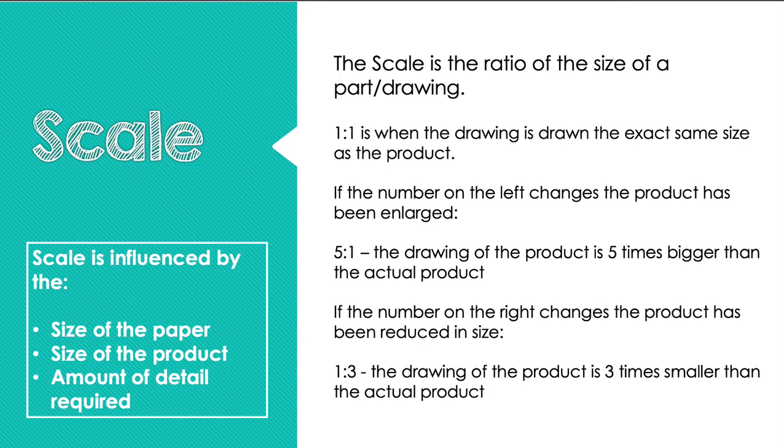For example, if I was going to draw an orthographic drawing of a house key, obviously the house key is quite small in size, so I would want to scale maybe five to one, so that my drawing is five times bigger than the actual key itself. If the number on the right side changes, then the product has been reduced in size. Earlier we've seen a drawing of a car. Obviously the car is too big to do a one-to-one scale, to do it the exact same size. So we need to scale down the size of the product to make sure that the drawing fits the paper. For example, I'm drawing my car, I might do a scale of one to twenty, which means that the drawing would be twenty times smaller than the actual car.